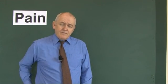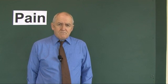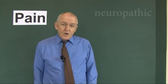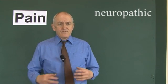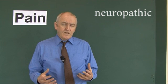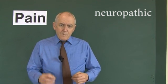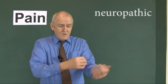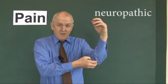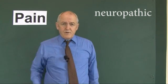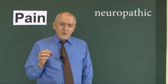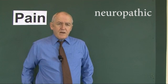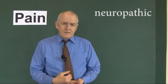Pain can be nociceptic, from the nociceptors — this is the most common source of pain we come across. But pain can also be neuropathic, which comes from the nerves themselves. If you've bashed your funny bone, that's where the nerve goes around the elbow joint — that's a form of neuropathic pain. The pain is coming from the nerve rather than from the nociceptors. So pain can be nociceptic or neuropathic.